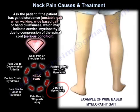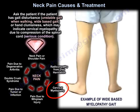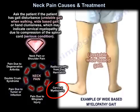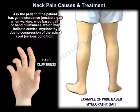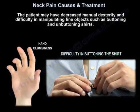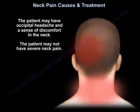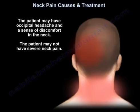Ask the patient if they have gait disturbance, unstable gait when walking, wide-based gait, or hand clumsiness. This may indicate cervical myelopathy due to compression of the spinal cord, which is a serious condition. The patient may have decreased manual dexterity and difficulty manipulating fine objects, such as buttoning and unbuttoning shirts. The patient may also have occipital headache and a sense of discomfort in the neck, but may not have severe neck pain.